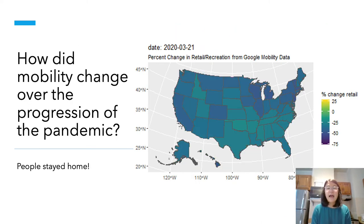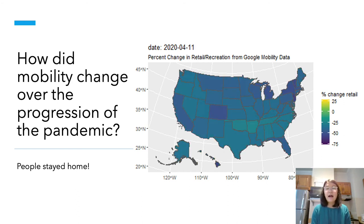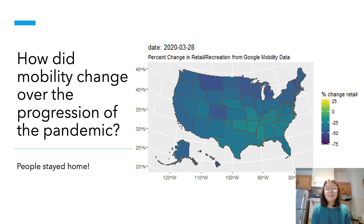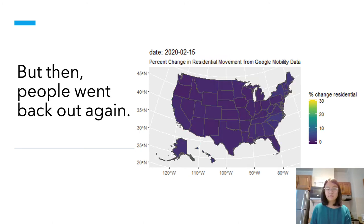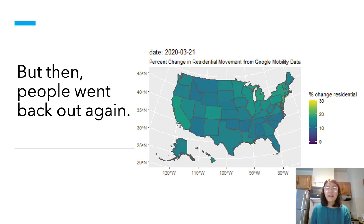First, I'd like to ask how mobility changed over the progression of the pandemic. This graph shows the percent change in visits to retail and recreation from Google mobility data. We can see that over time the graph becomes very dark, showing a decrease in percent visits to those places. However, as the pandemic crests, the graph becomes lighter, returning to almost baseline levels. This next graph shows the percent change in residential movement, indicating that across the progression of the pandemic, people started to stay home more and more, but as the weather warmed up, they went back out again.